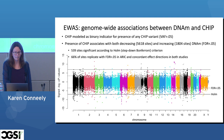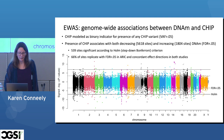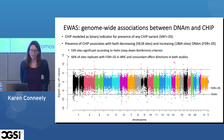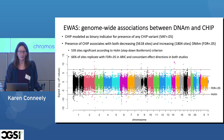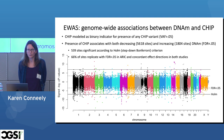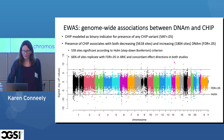When we performed the EWAS, this Manhattan plot shows that the presence of CHIP associates with both decreasing and increasing DNA methylation at a large number of sites. Over 5,000 sites showed FDR-significant decreases in methylation as a result of having CHIP, and nearly 2,000 sites showed increasing methylation. If we looked at the Bonferroni criterion, there were still over 500 significant sites. 66% of these FDR-significant sites — around 7,000 in total — replicated using a rather conservative replication criterion in ERIC.